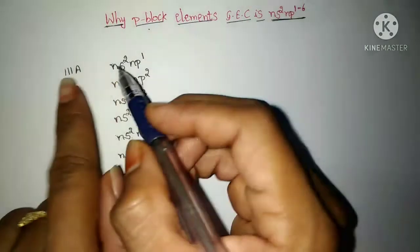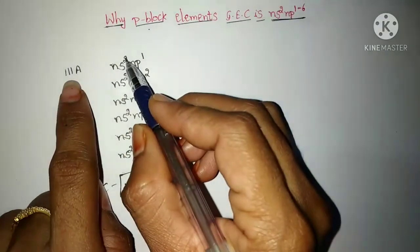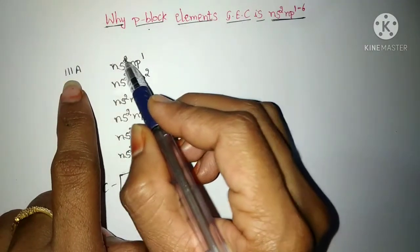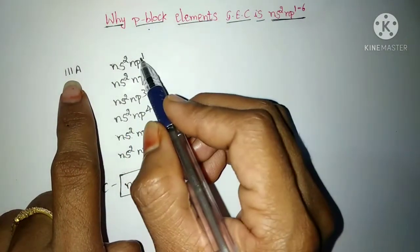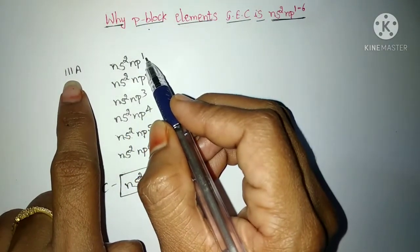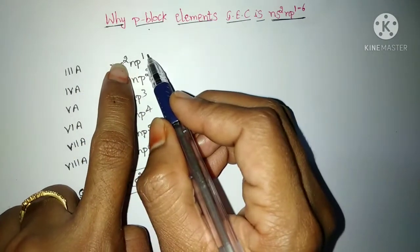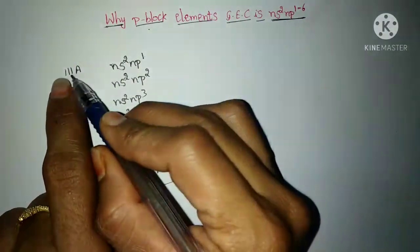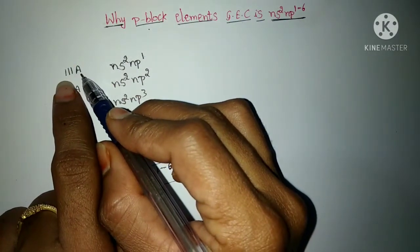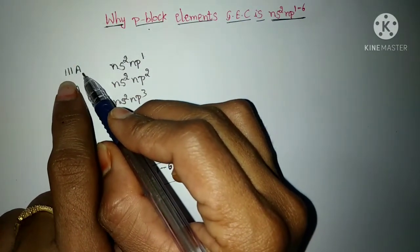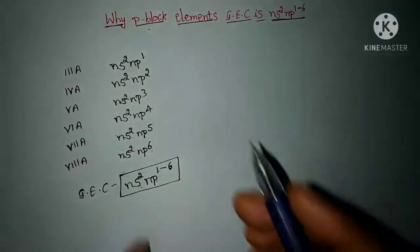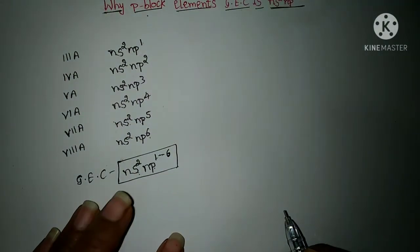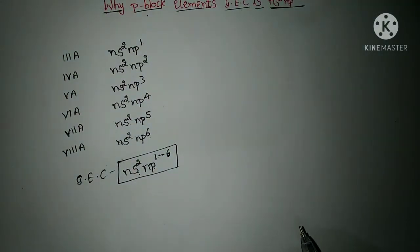One more point: the group number equals its number of valence electrons. So in the valence shell, however many electrons are there — if you count that number, you will get its group number. We will discuss this further in coming videos. I hope you liked this video. Thank you.